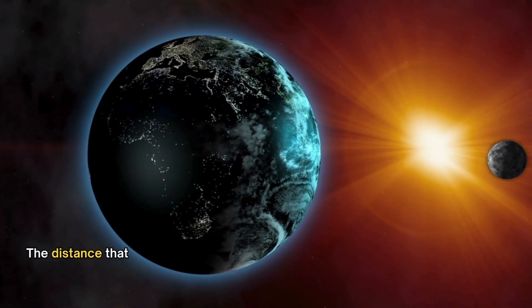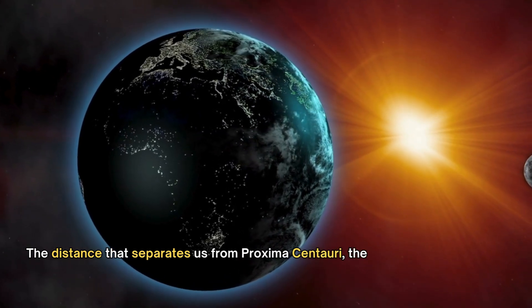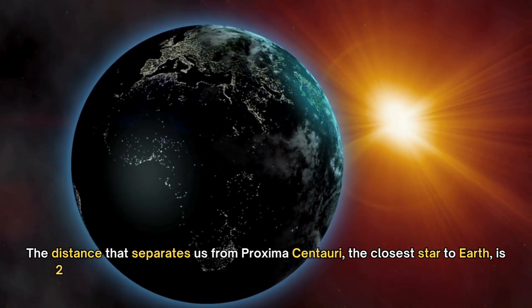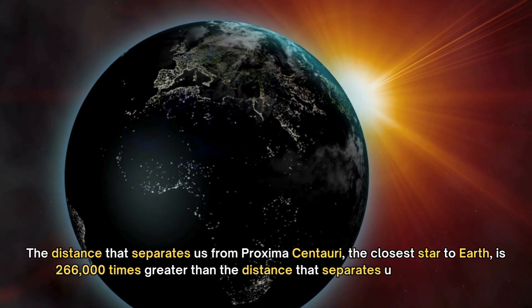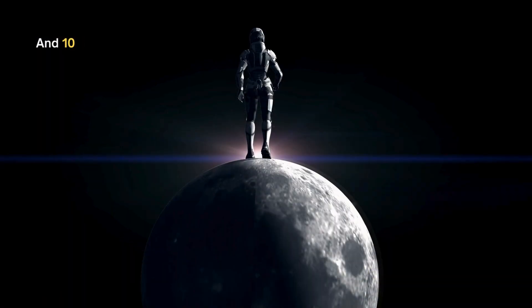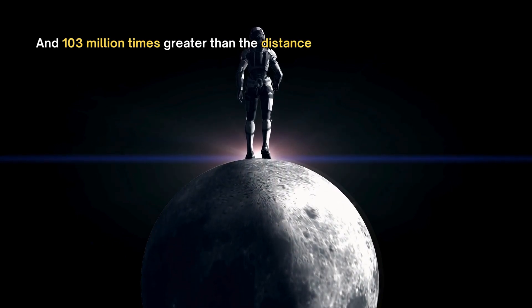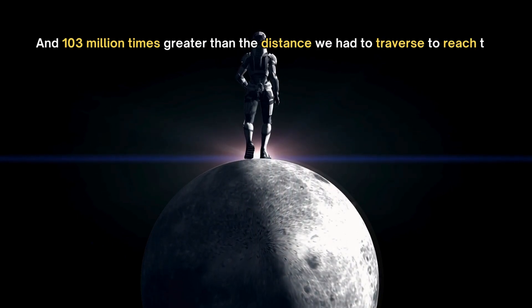The distance that separates us from Proxima Centauri, the closest star to Earth, is 266,000 times greater than the distance that separates us from the Sun, and 103 million times greater than the distance we had to traverse to reach the Moon.